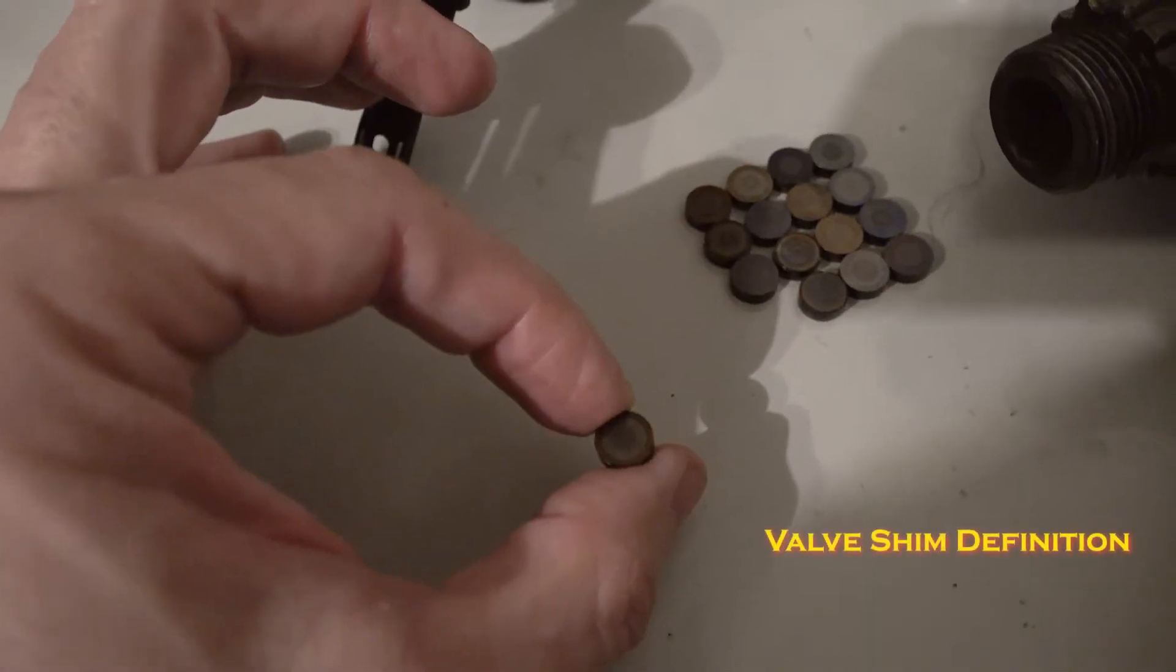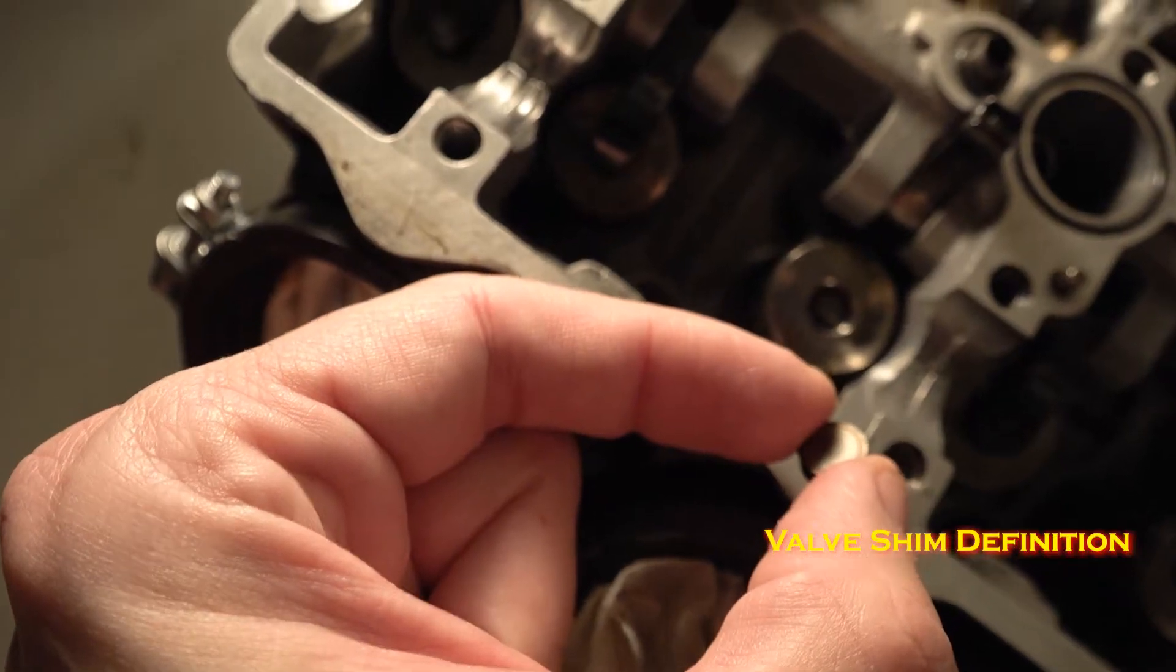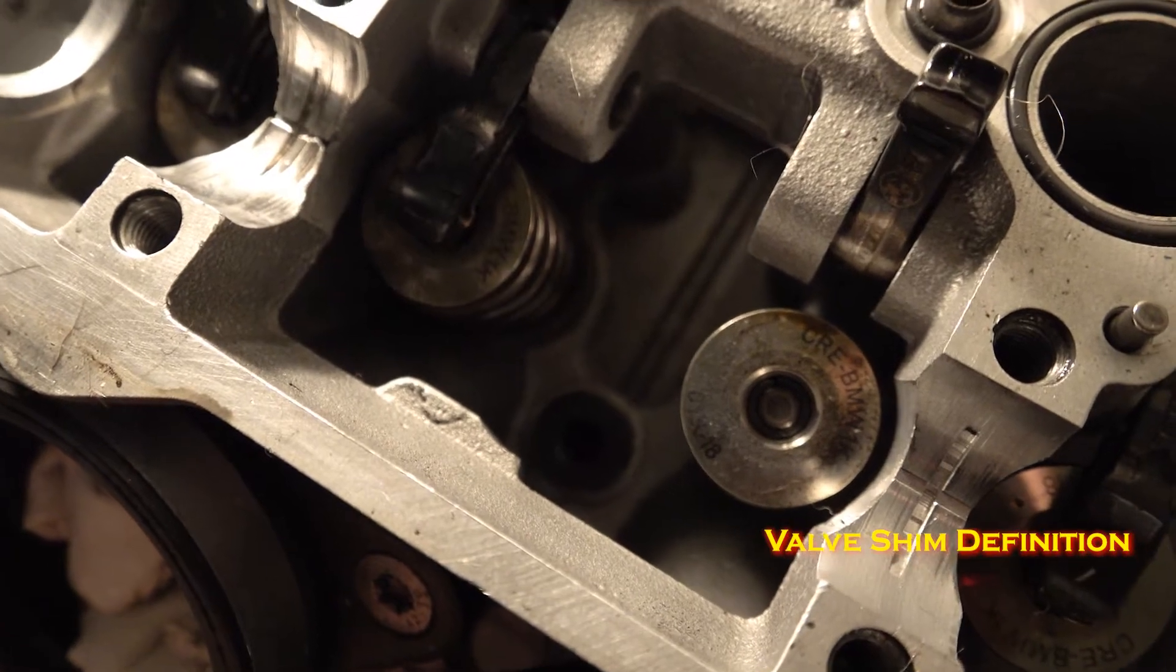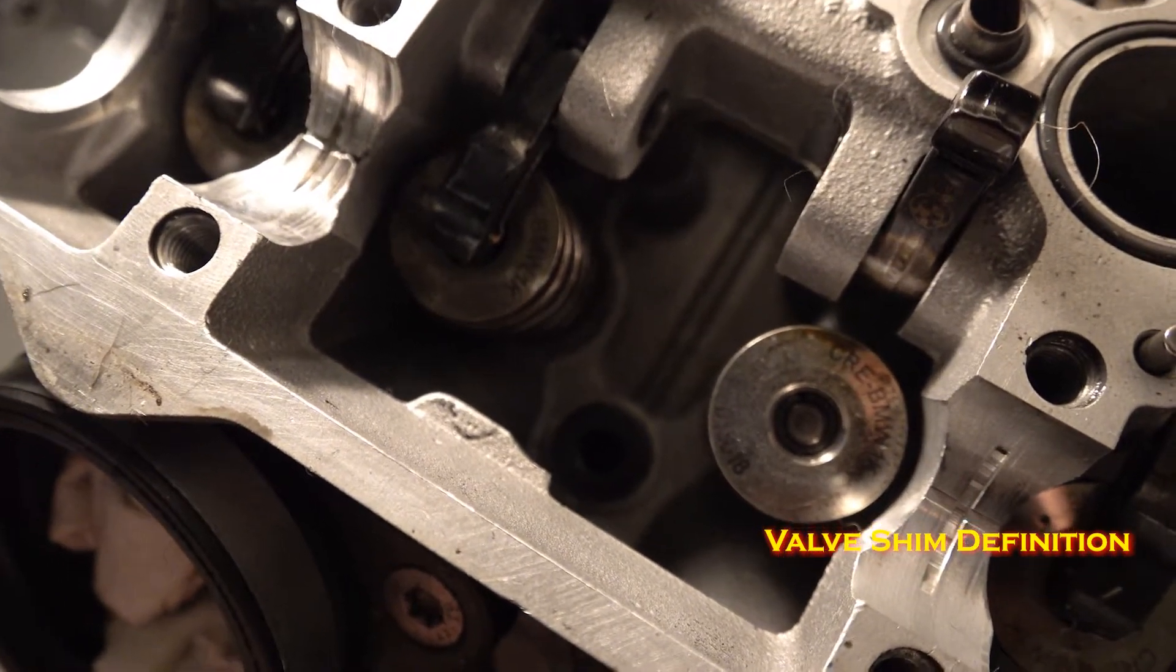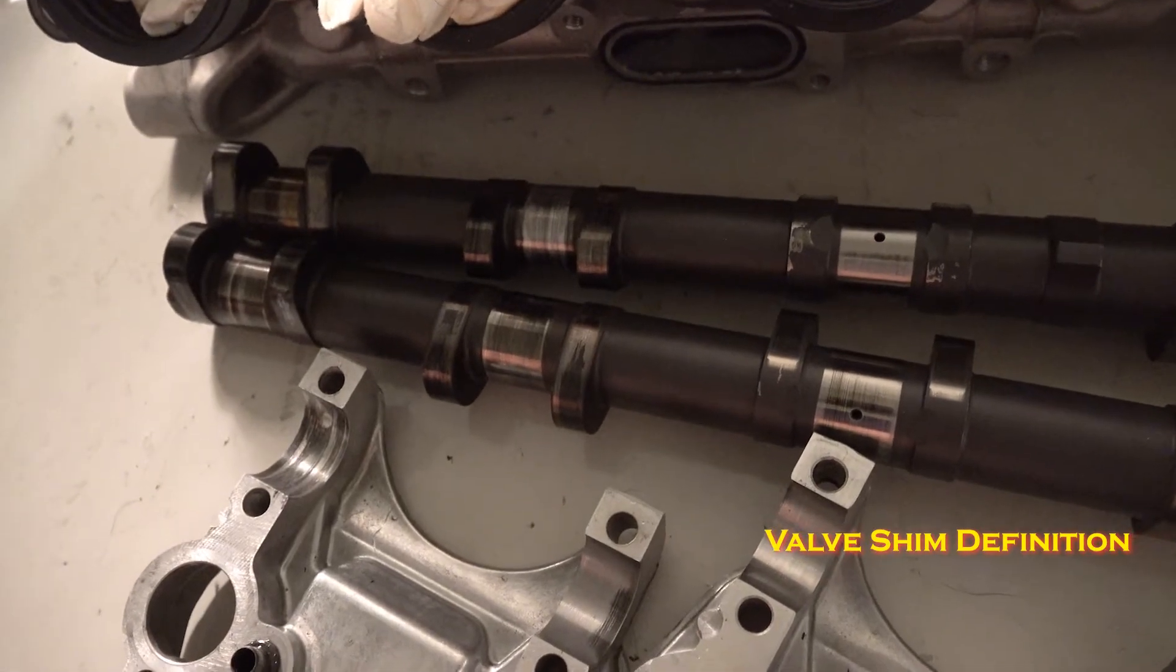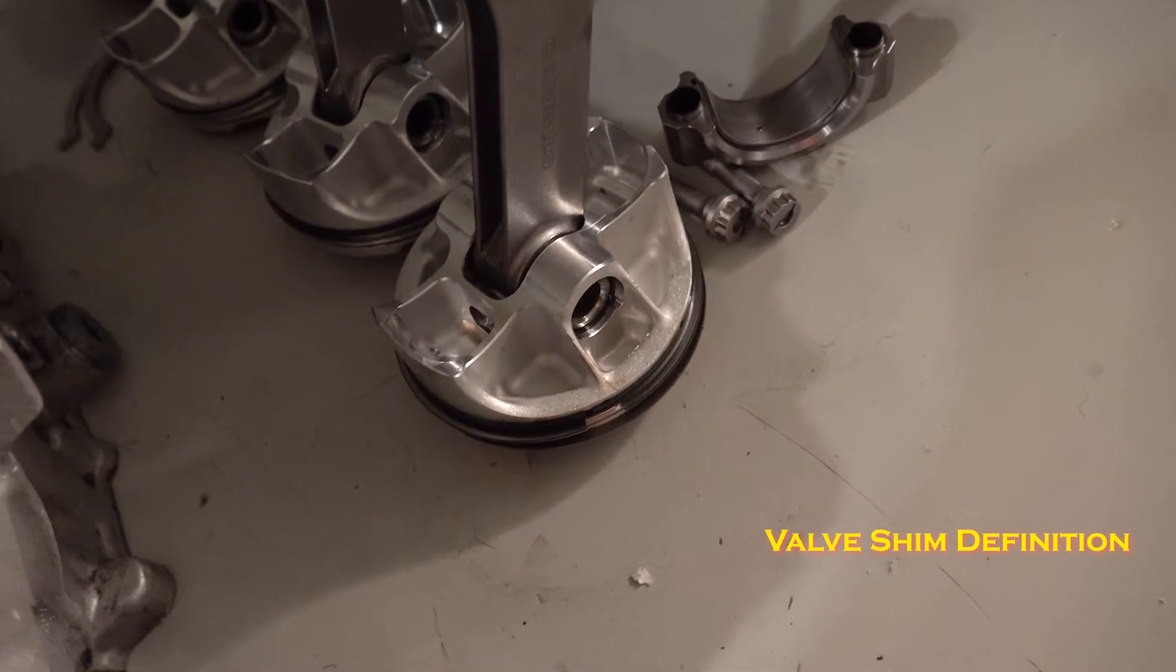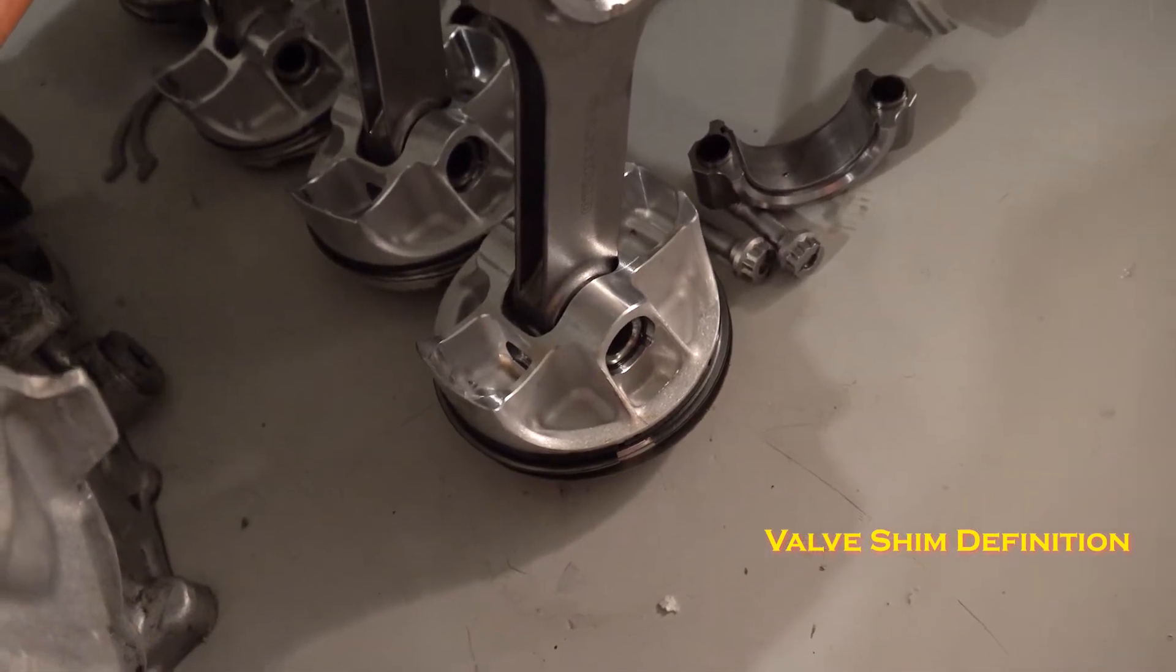The valve shims are a critical component to the engine and have to be exact. That little piece of metal goes on top of the valve and takes up the space between the valve and the camshafts, and if it's not exact then things like the valves can end up hitting the pistons on the top side and causing problems.